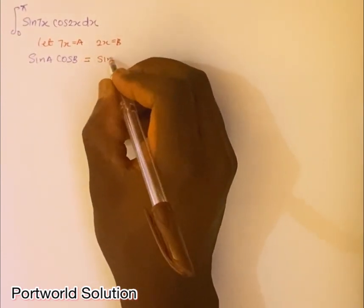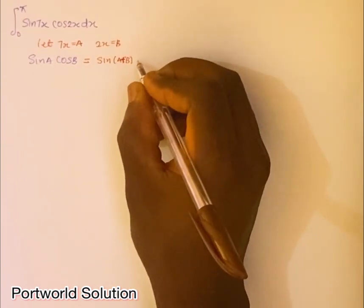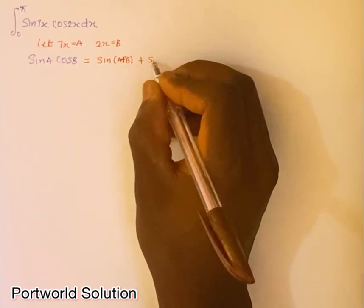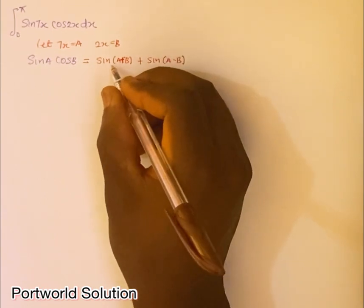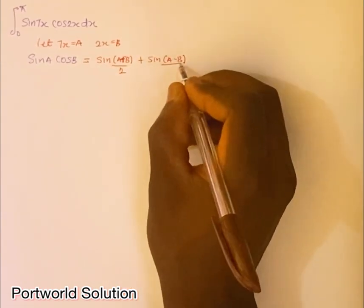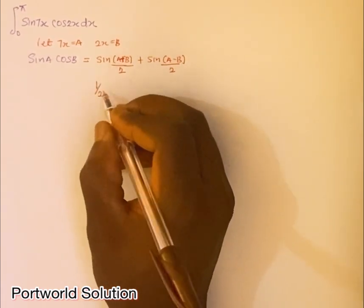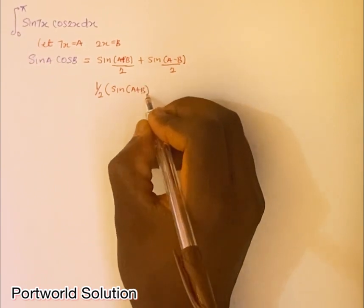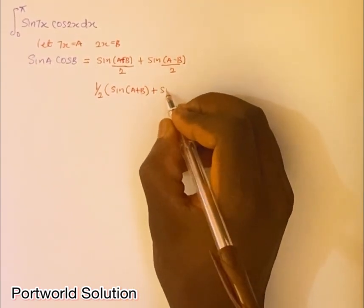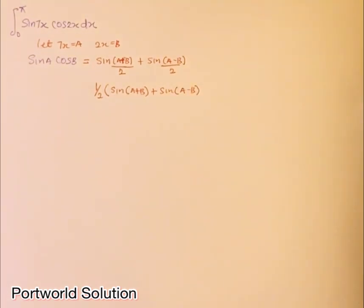The identity is: sin(A)cos(B) = ½[sin(A+B) + sin(A−B)]. You can factorize the one-half out, giving you one-half times the bracket: sin(A+B) plus sin(A−B). That's the identity we'll apply.